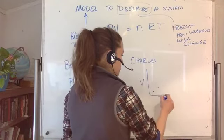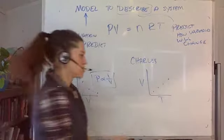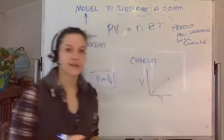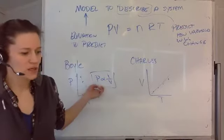And so they found this relationship. Turns out it was linear. Yay. So this is known as Charles' Law. This one's known as Boyle's Law. And it keeps going.